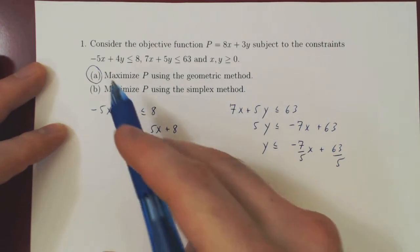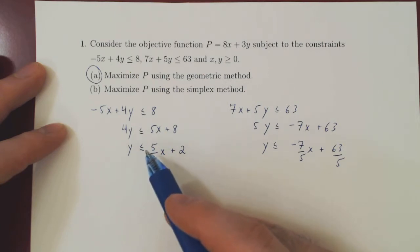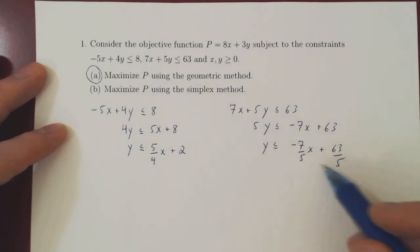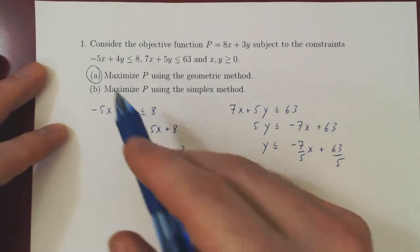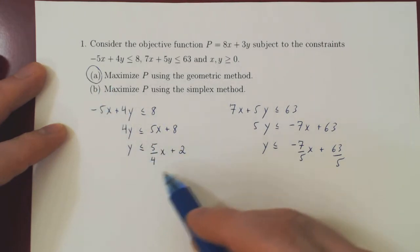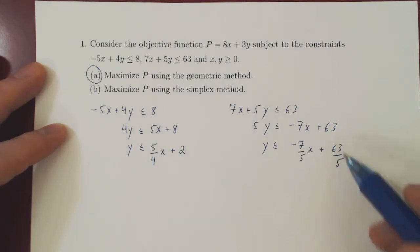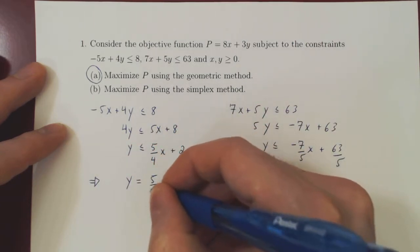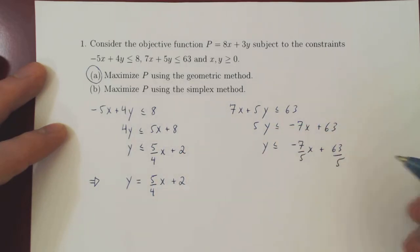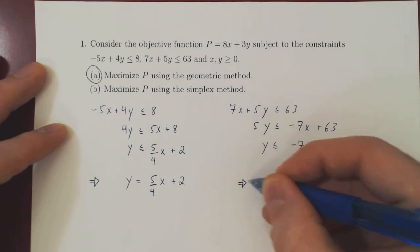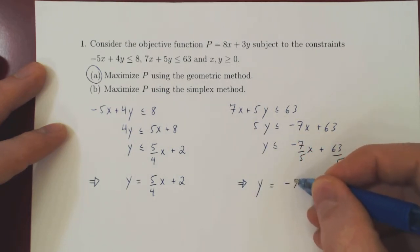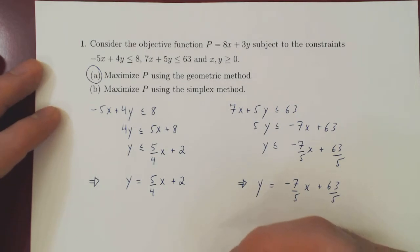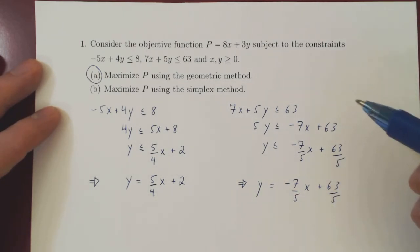So if you look, the first inequality says that y must be always at most this function of x, and the second inequality says that y must always be at most this function of x. Well, when we sketch our feasible region we'll consider these two lines. So y equals this and y equals this. So the corresponding line y equals 5 quarters x plus 2. The second line y equals negative 7 over 5x plus 63 over 5.